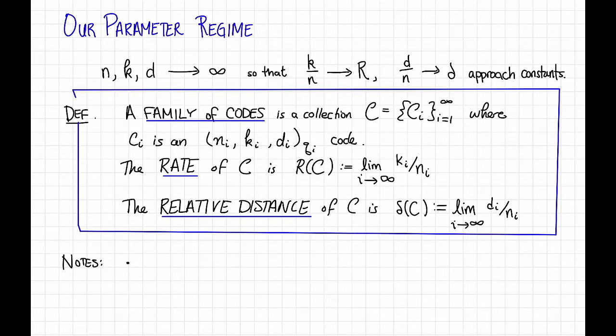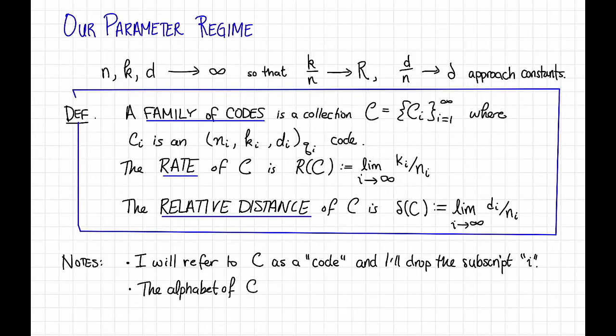Just some notes about this definition. First, I'm going to frequently refer to C, the family of codes, as just a code. And I'll drop the subscript i. That is, I'm going to abuse notation and just think about a single code C, but somehow its parameters n and k and d are all tending to infinity. This is not technically correct, but it will save us a lot on the subscripts, and hopefully it won't confuse things too much. A second note is that the alphabet of C, the family, might not be constant. It might depend on which code in the family we're looking at. In that case, when I'm abusing notation like this, I might say that this code C has the alphabet which is a function of the block length n or something like that.